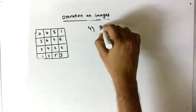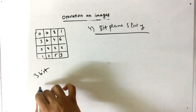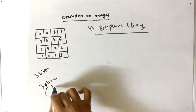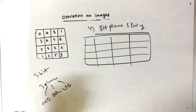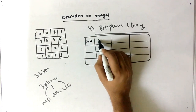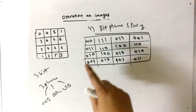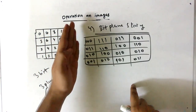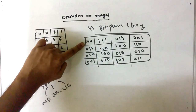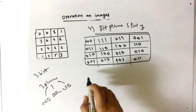The fourth operation is bit plane slicing. Since we have 3 bits, we have 3 planes: the MSB, the center, and the LSB. The first step is to convert the image into a 3-bit representation. For example, 0 is represented as 0 0 0, 7 as 1 1 1, and 3 as 0 1 1. Then the first bit column gives the MSB plane, the last gives the LSB, and the middle is the center plane.